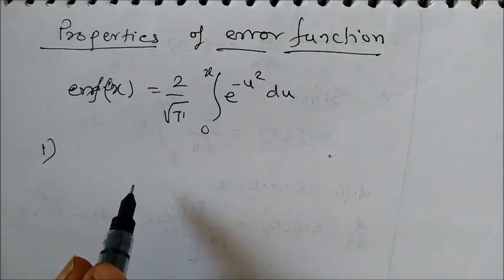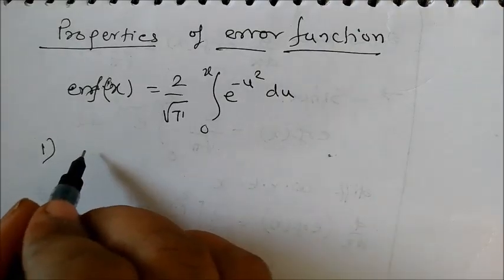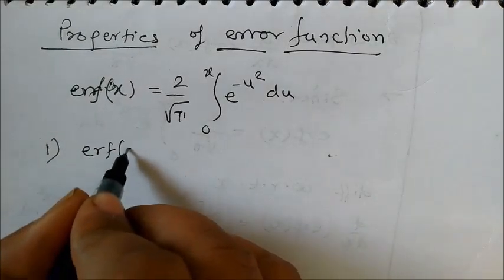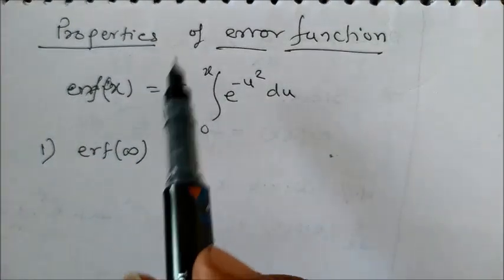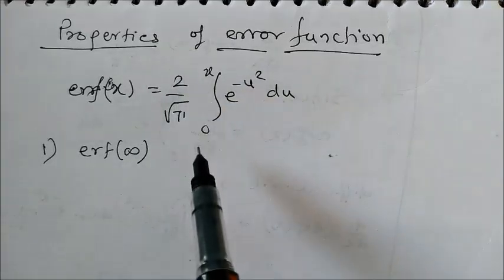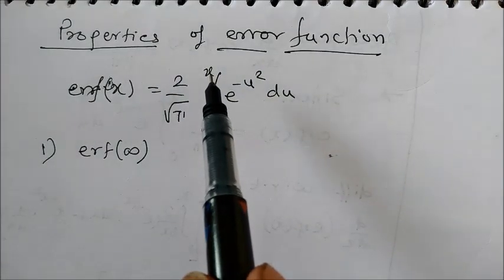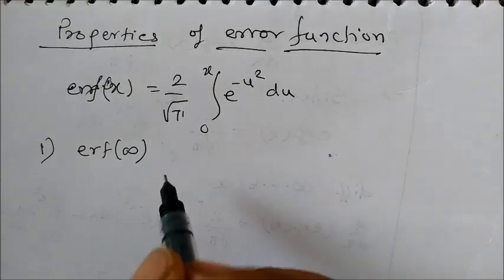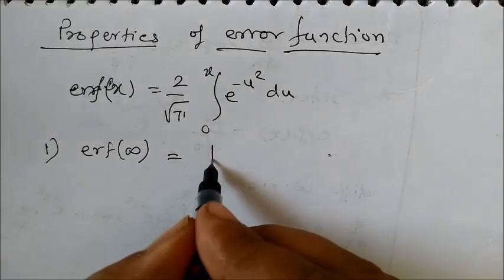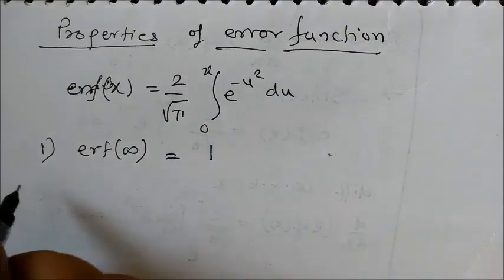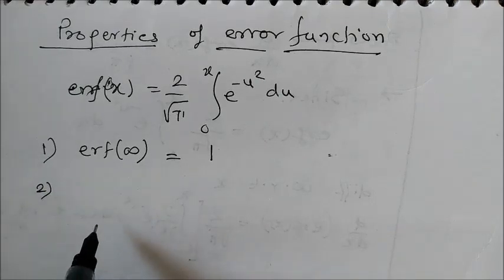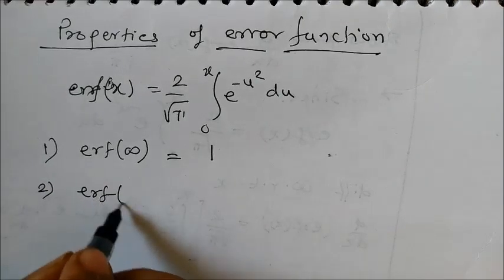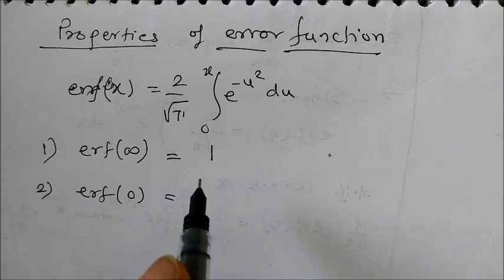So let me list out here some of the properties of the error function. First property is what is erf of infinity, that means if I take this integration and take this upper limit as infinity what will happen. You can easily prove that this is equal to 1. Let us take the second property, what is erf of 0. Now obviously from 0 to 0 whatever you integrate you'll get 0 ultimately.